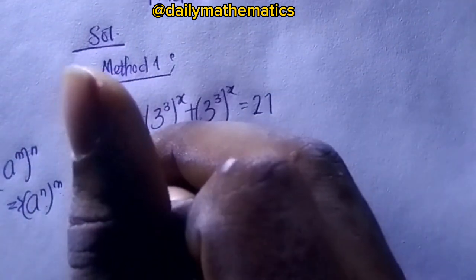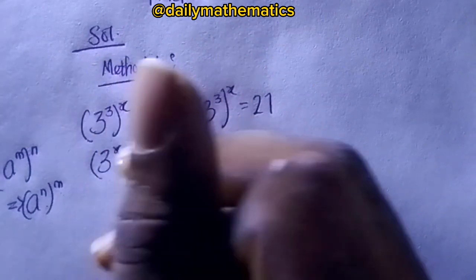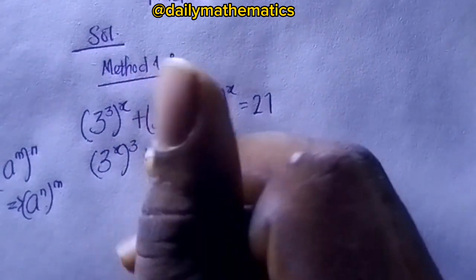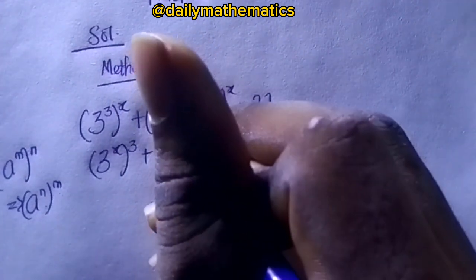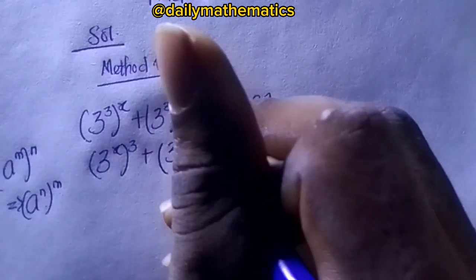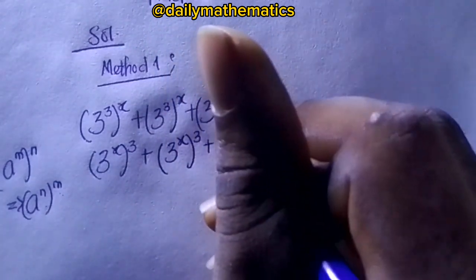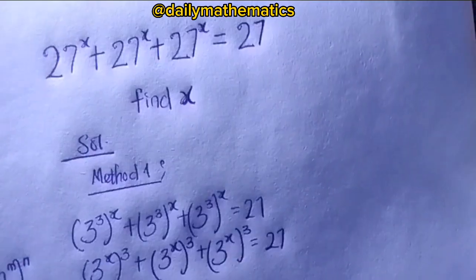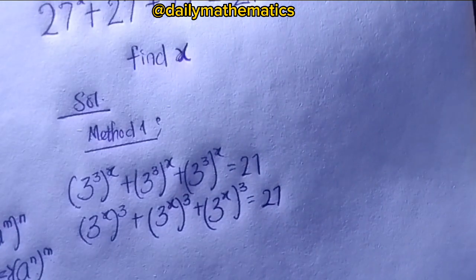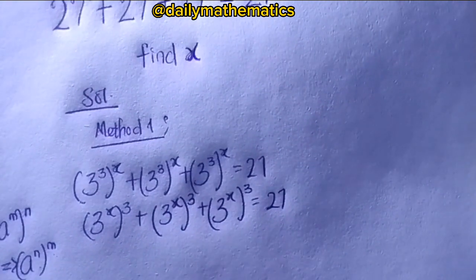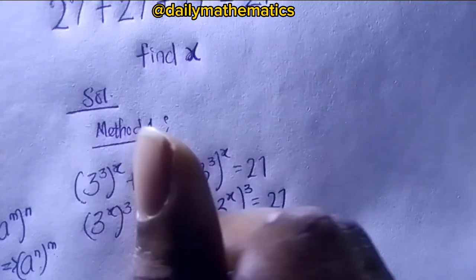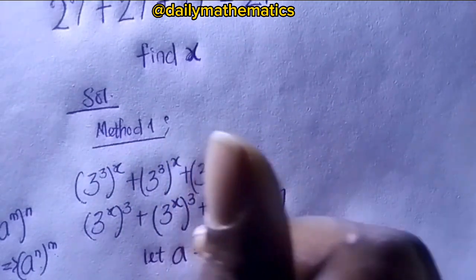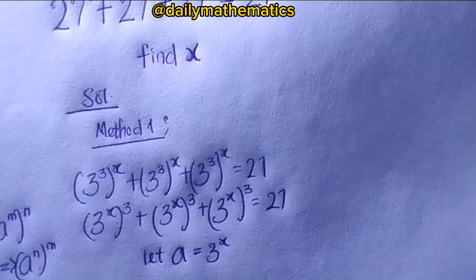Applying that law, we get 3 raised to the power of x, raised to the power of 3, plus 3 raised to the power of x, raised to the power of 3, plus 3 raised to the power of x, raised to the power of 3 equals 27. Now we have 3^x appearing three times, so let a equal 3 raised to the power of x.